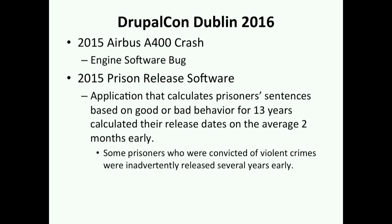A software error caused the early release of prisoners. An application calculating prisoners' sentences based on good or bad behavior had, for 13 years, calculated release dates two months early on average. Some very violent convicts were released years early. This happened in Washington State. Based on good or bad behavior you can be let out early or kept later — and everybody got out early because of this software problem.